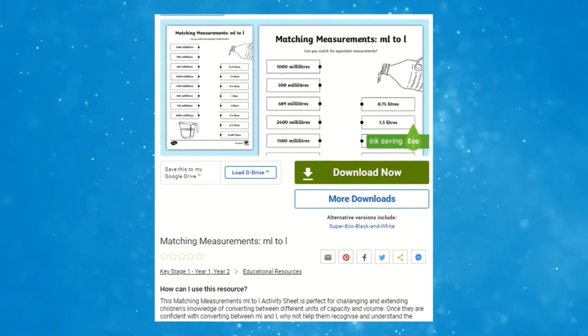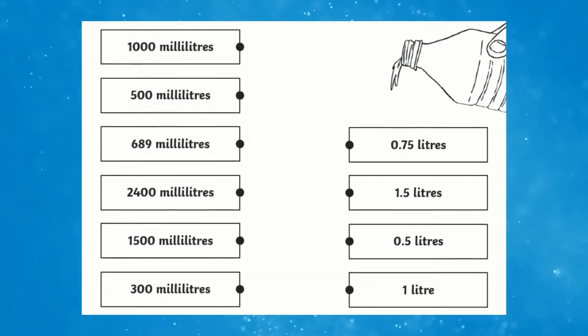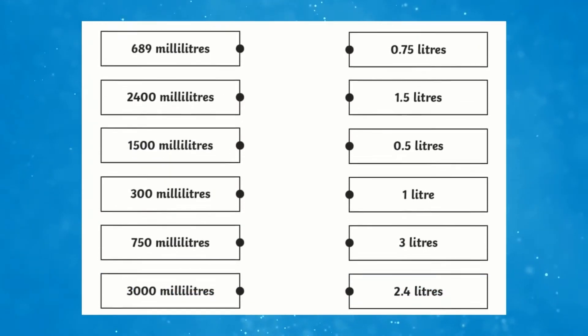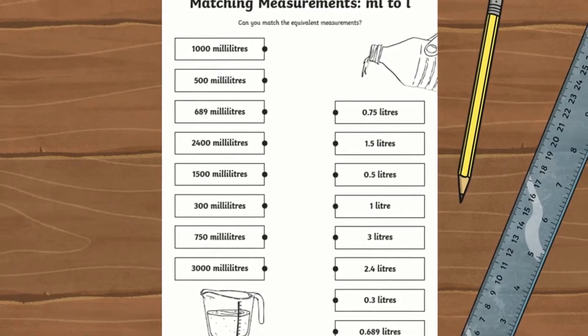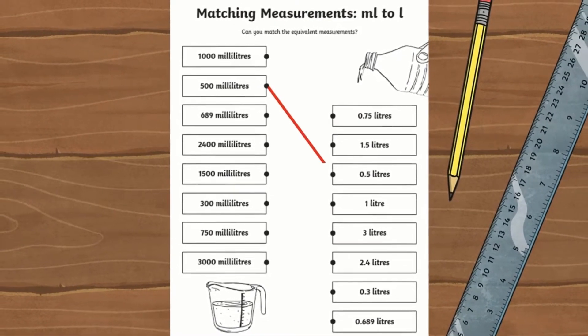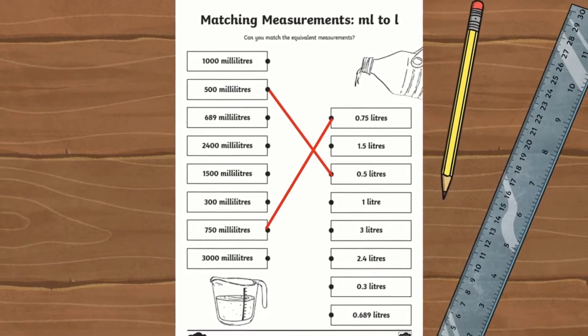This activity sheet is perfect for challenging and extending children's knowledge of converting between different units of capacity and volume. Children simply match the equivalent measurements from one side to the other, finding the equivalent measurements of milliliters and liters.